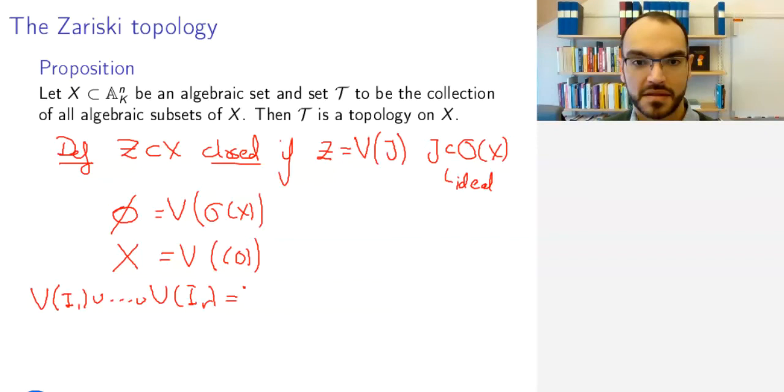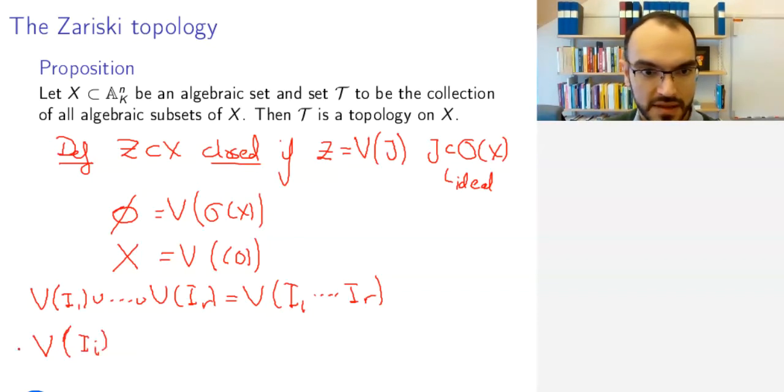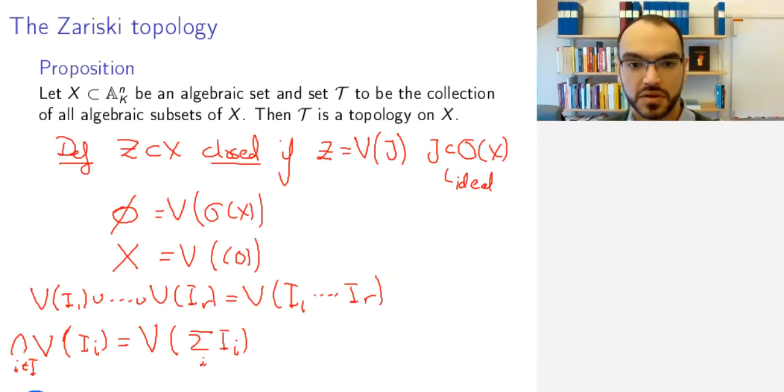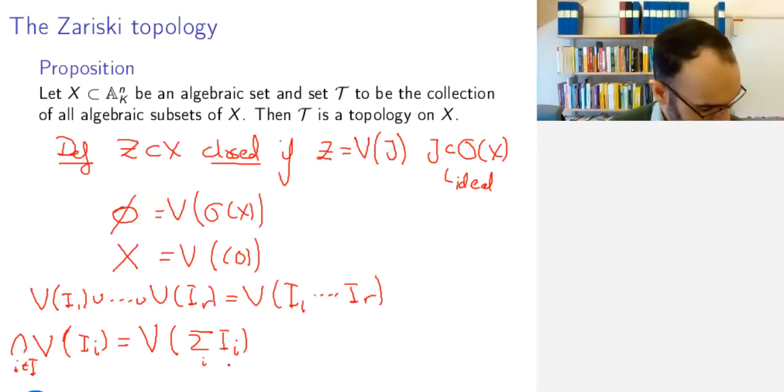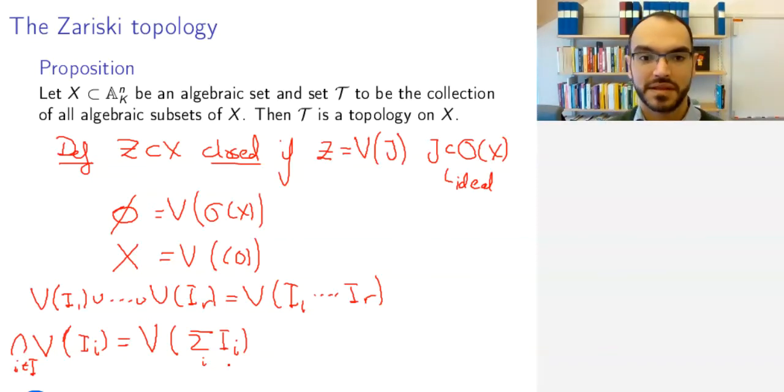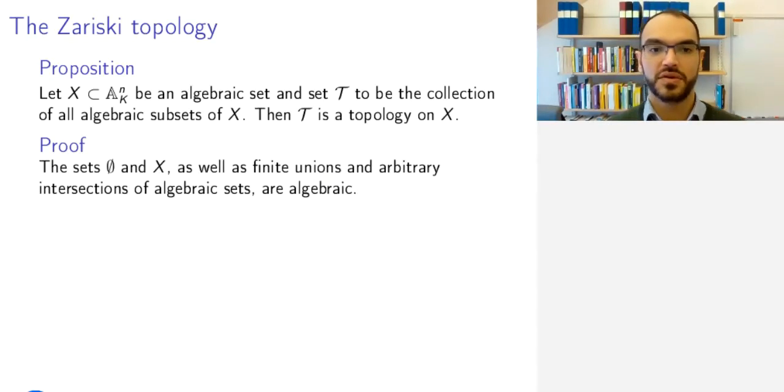The union V(I₁) through V(Iᵣ) is V of the product I₁ through Iᵣ. Also, we've seen that V of Iᵢ as you intersect any collection of ideals, you will get the vanishing set of the sum, or rather which is the same, the union. Therefore, we know that these axioms do hold for this collection of subsets. In short, because the empty set, the whole set, finite unions, and arbitrary intersections of algebraic sets are algebraic, this is a topology on X.